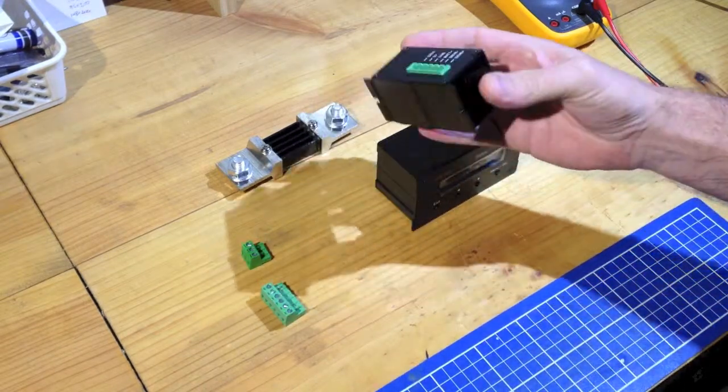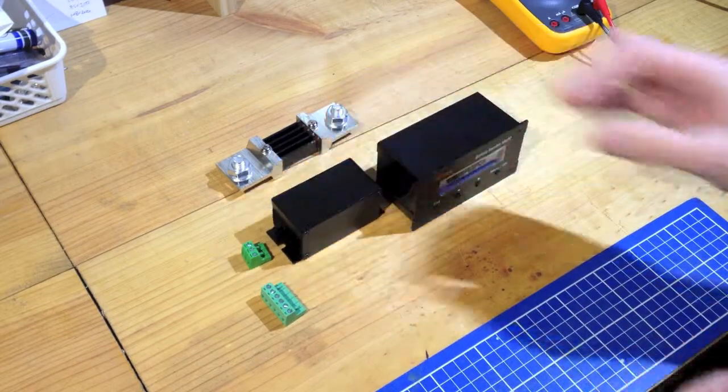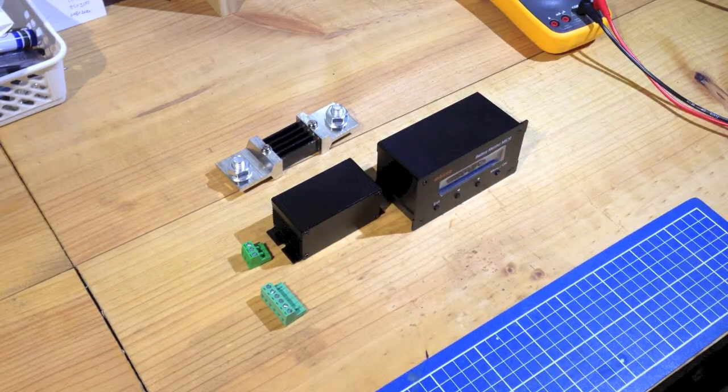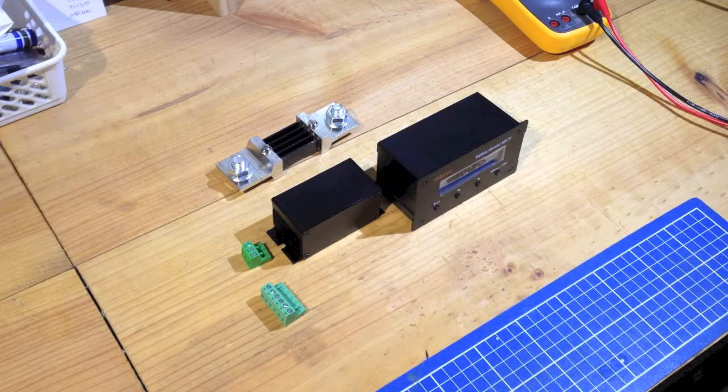The other unit is the sensor unit. This unit here is designed to be installed reasonably close to the battery and does the measurements of the voltage and current coming out of the system itself.